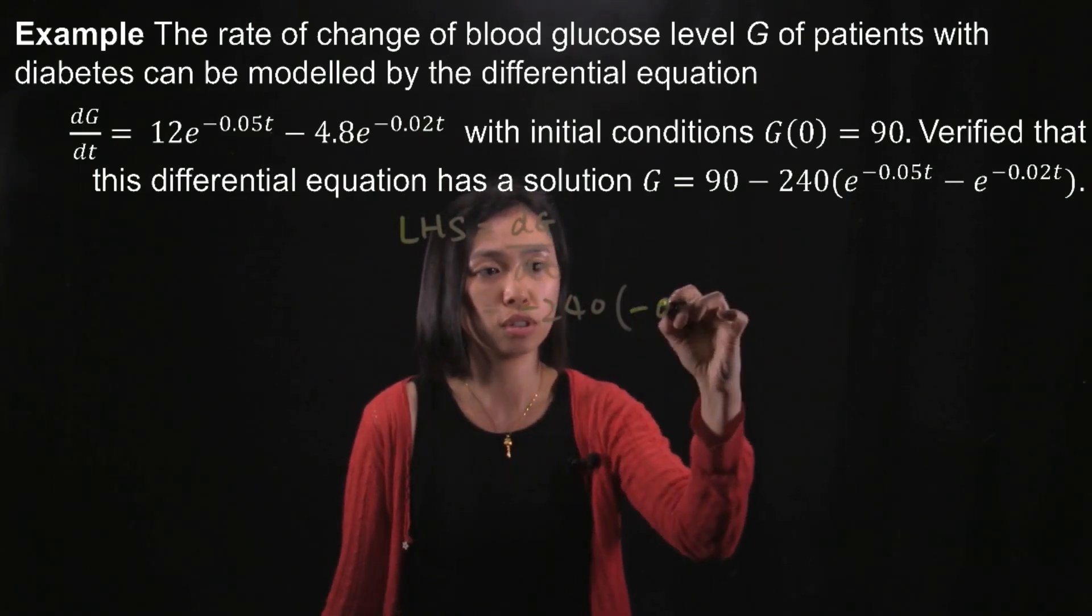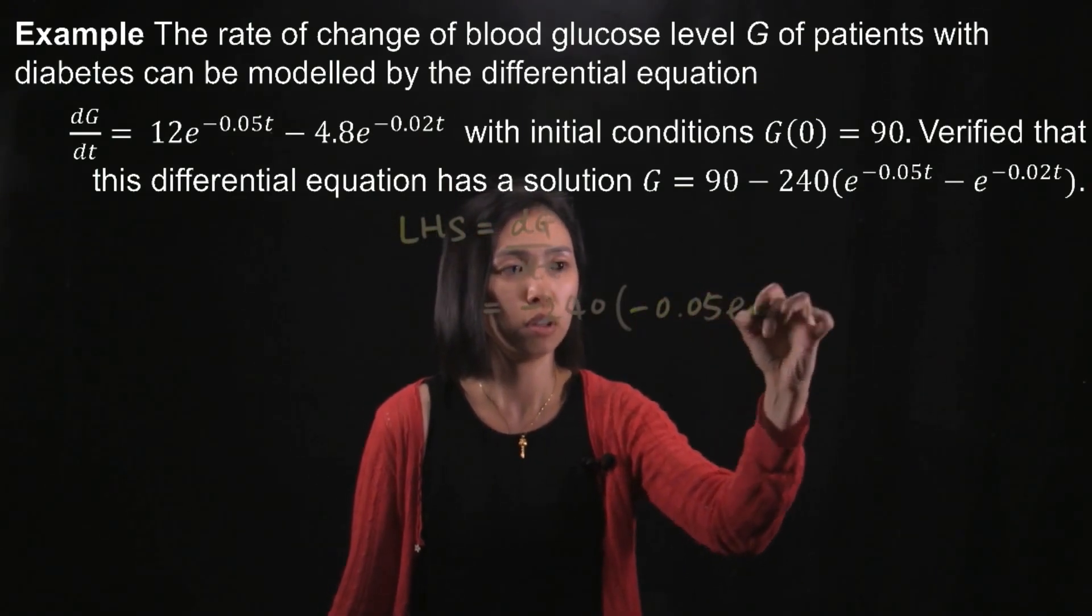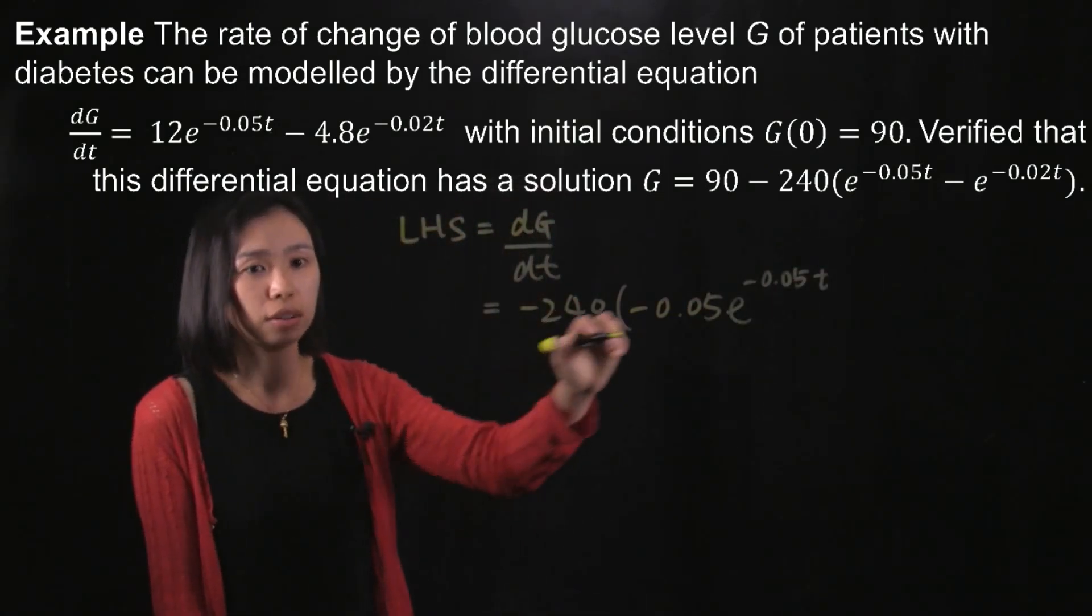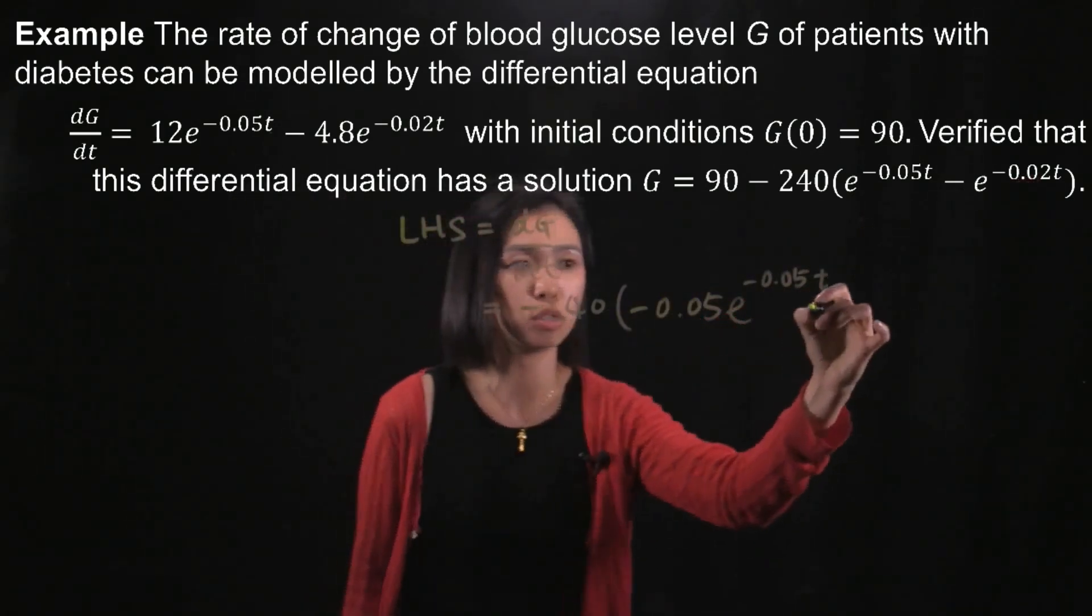So we differentiate that. You get negative 0.05e to the power of negative 0.05t. And then later on here you've got negative negative, which means you've got a plus.